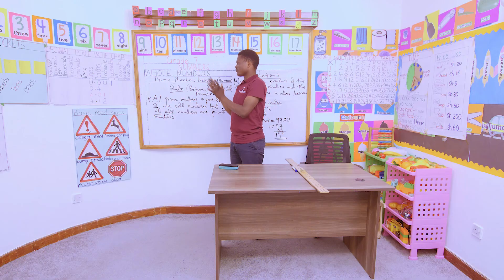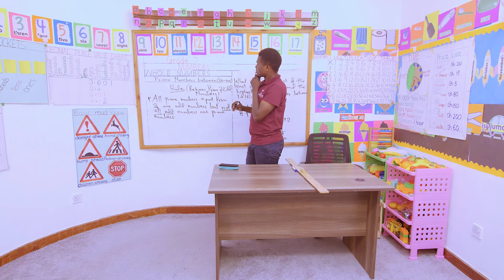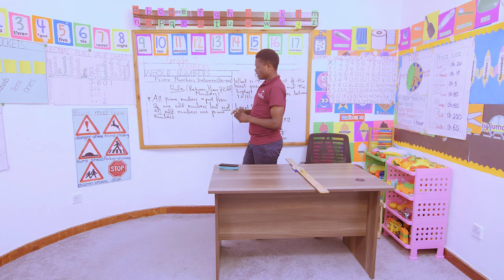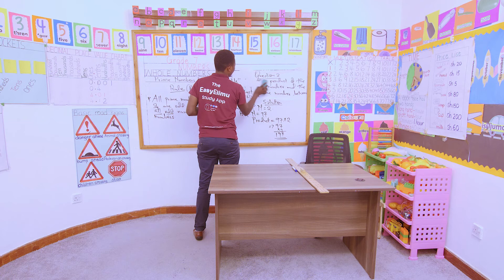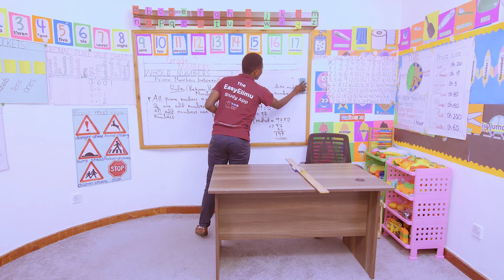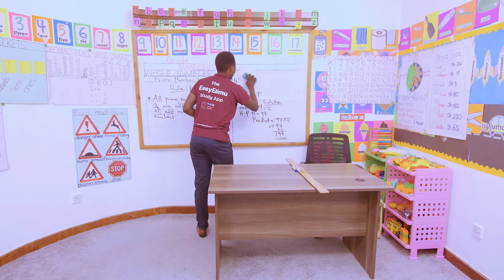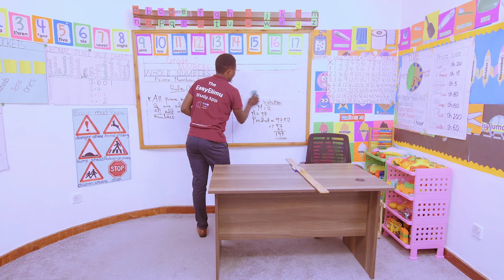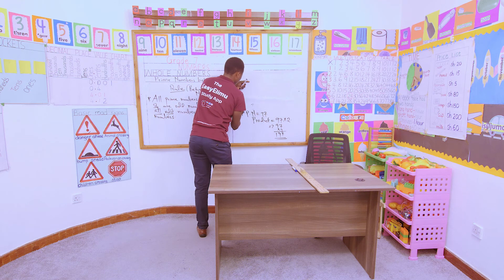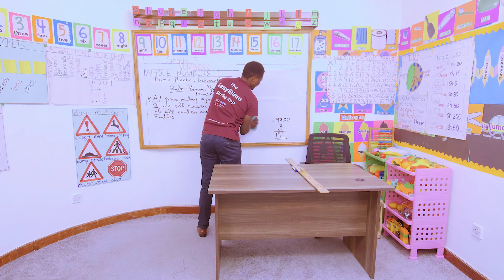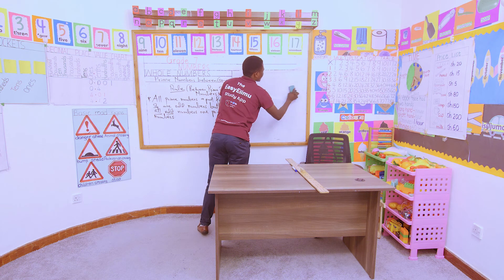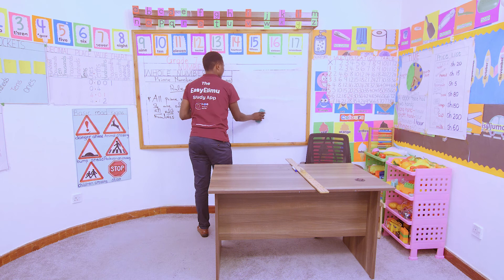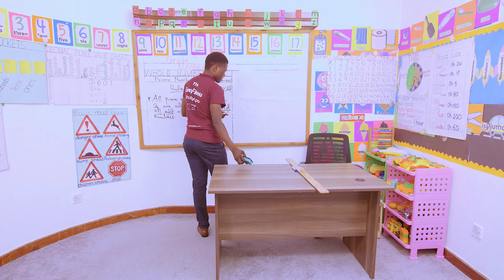Kindly take note of that so you don't get confused between the two. Just to summarize: you don't need to cram the prime numbers — just identify the factors. So long as the factors are one and the number itself, then that is a prime number.